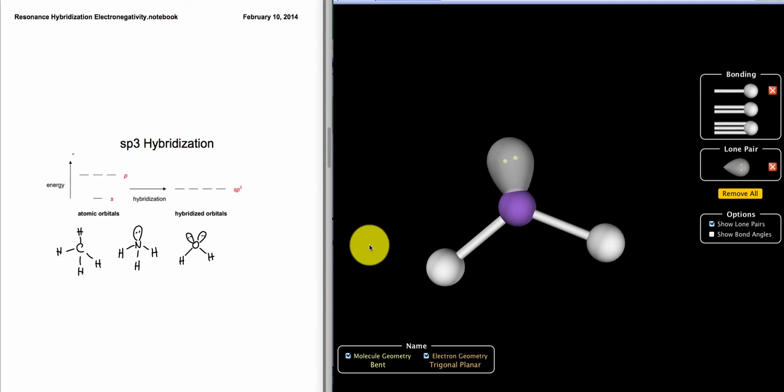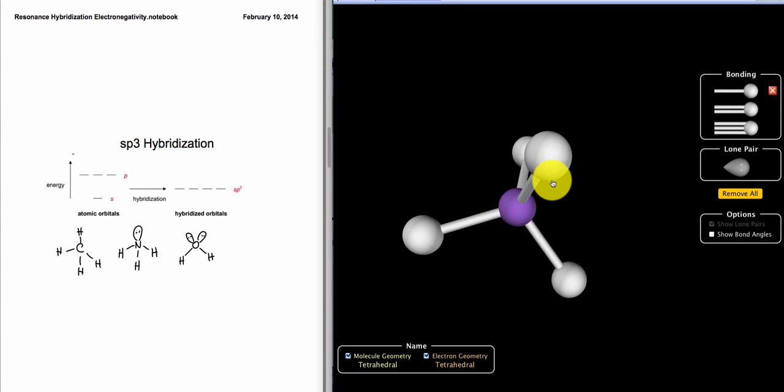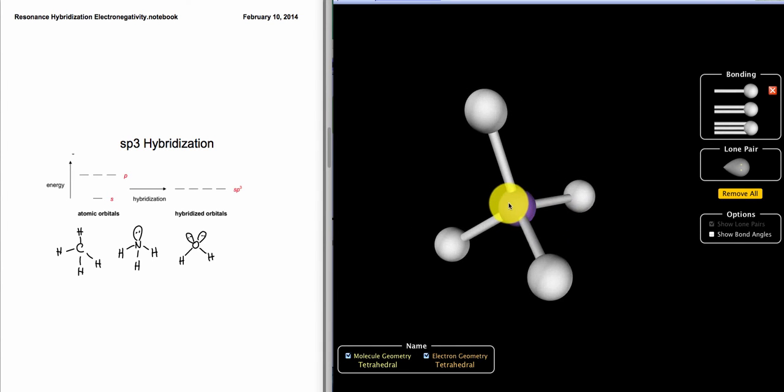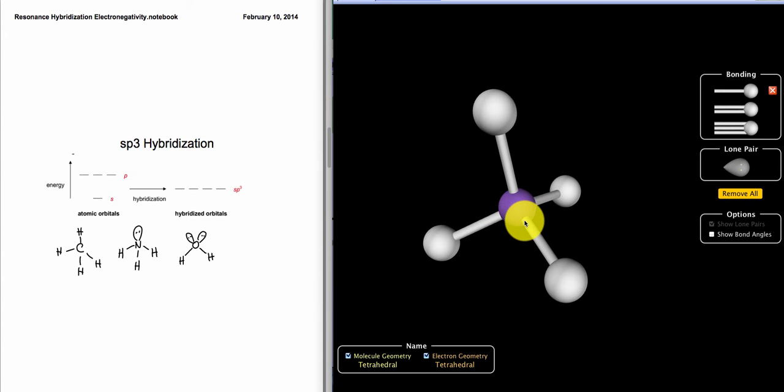The idea is those orbitals have to mix. We have evidence that they mix because we see very consistent results throughout. When we look at something like methane, we see essentially four equivalent bonds. We don't see an s-s bond or a bond involving s orbitals interacting that's different from the p orbital interactions. So we have strong evidence that something is going on where those orbitals are changing, and the idea is they're mixing.